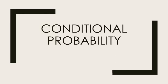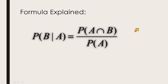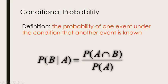In this video we're going to look at conditional probability. Conditional probability is the probability of one event under the condition that another event is known.